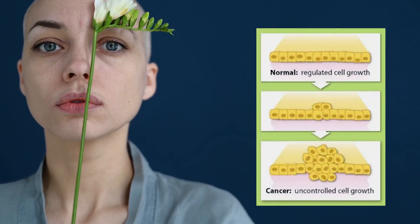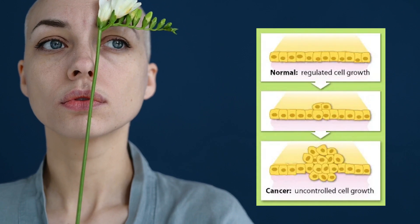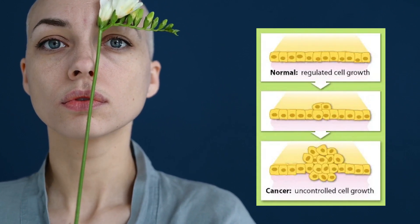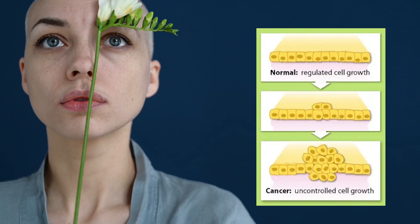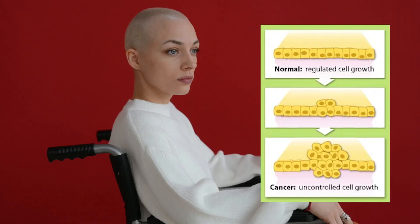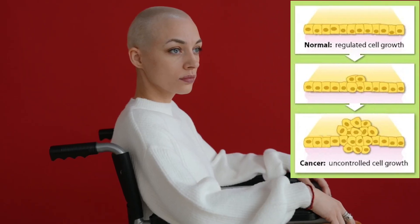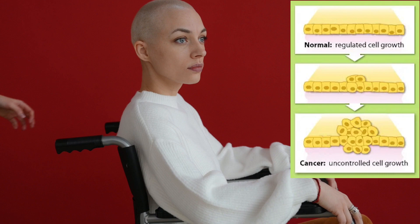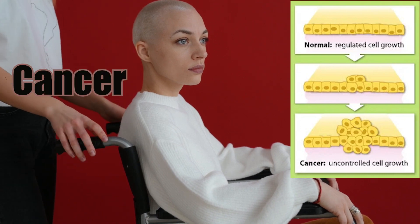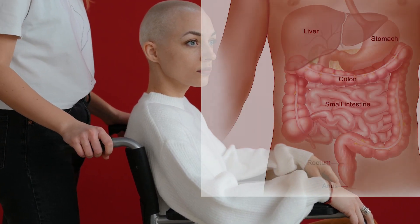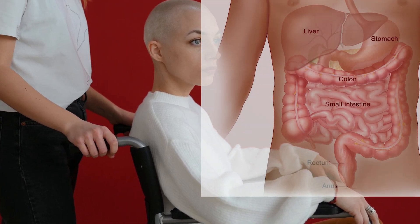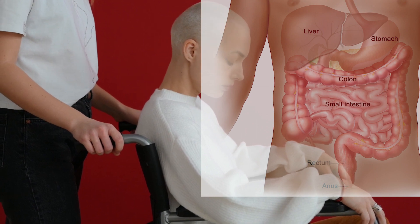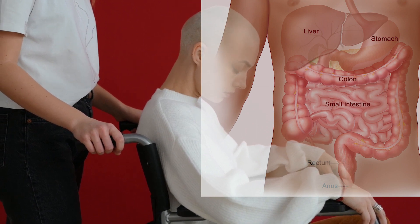Normally, cells grow and divide just enough to either grow or replace damaged tissue. However, at times, the mechanisms regulating cell growth malfunction, leading to uncontrolled cell division, a condition known as cancer. When this happens in the cells lining the colon, the first part of the large intestine, it's referred to as colon cancer.